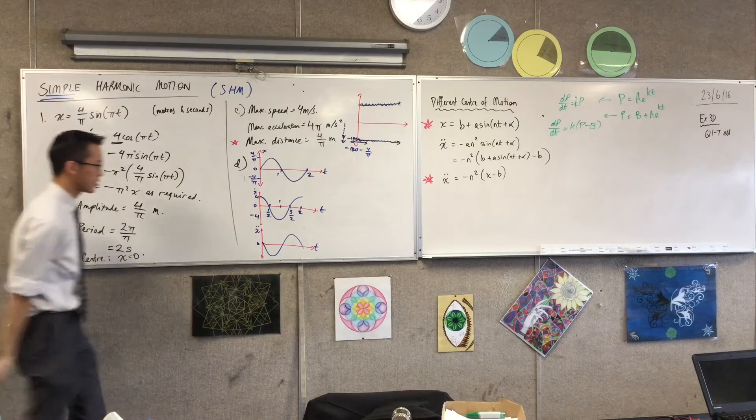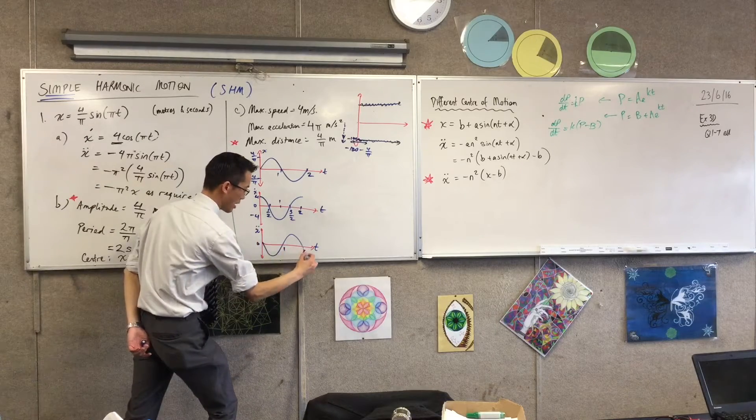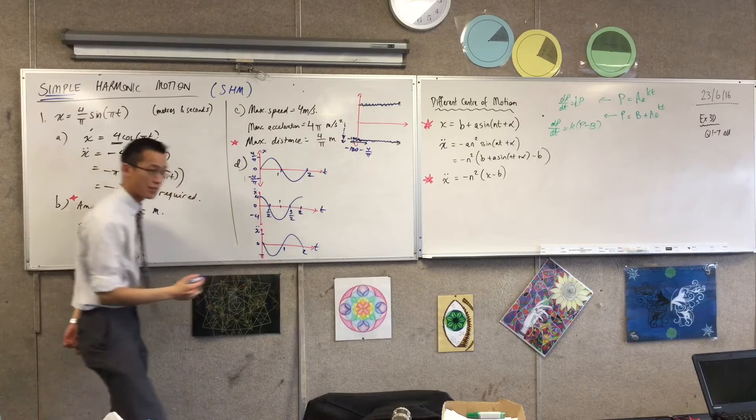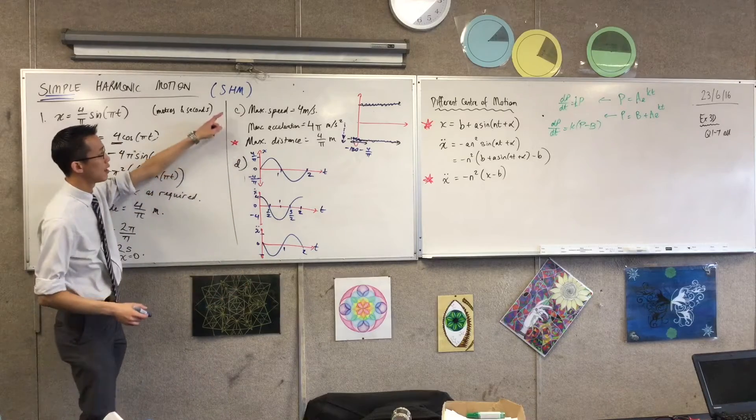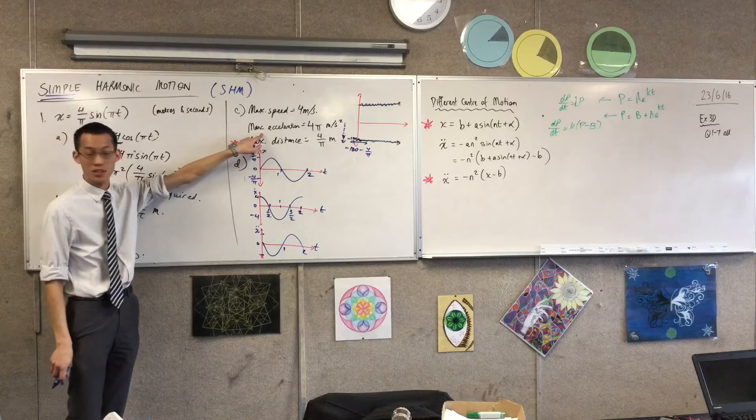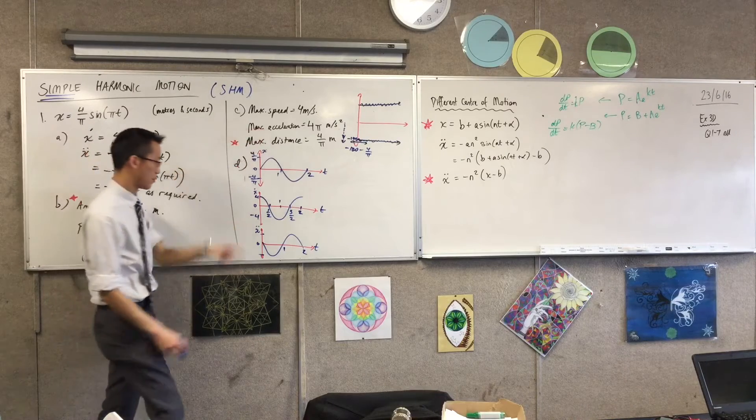Okay, and lastly, you still got zero, one, and two, but your amplitude now is... There it is. There's my maximum acceleration. Okay? Four pi and negative four pi.